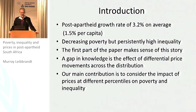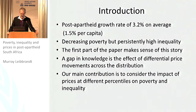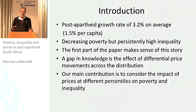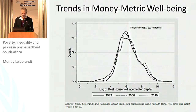The first part of the paper makes sense of that story. There's a lot of research, and we've got quite good data in South Africa — it's mostly the income data that's been used to tell that story. A gap in the knowledge is the effect of differential price movements across the distribution, and what that has done to the poverty and inequality story. That's the main new contribution. Let me briefly summarise the received wisdom on the post-apartheid poverty and inequality story.